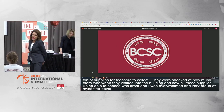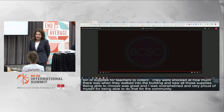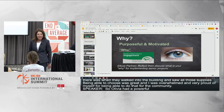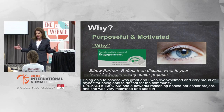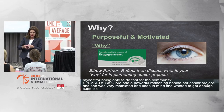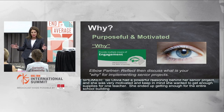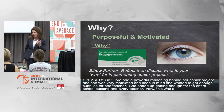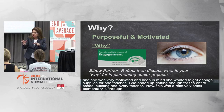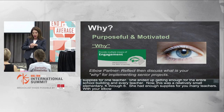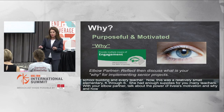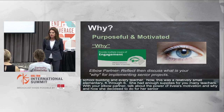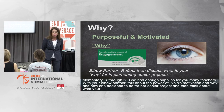Olivia had a very powerful reasoning behind her senior project and she was very motivated. Keep in mind she wanted to get enough supplies for one teacher — she ended up getting enough for the entire school building. She had enough supplies for seven teachers when she was hoping to get enough for one. With your elbow partner, just talk about the power of Olivia's motivation and why she decided what to do for her senior project, and think about what your why might be if you were doing a senior project.